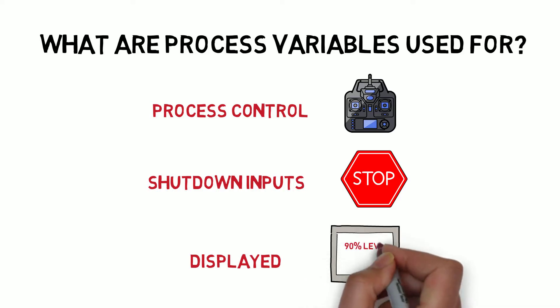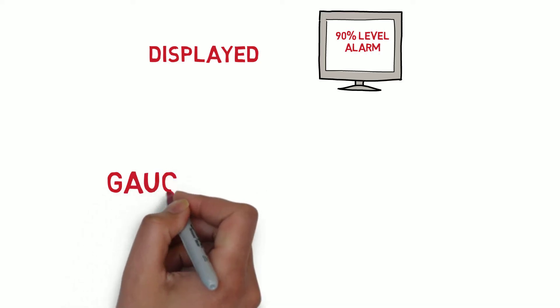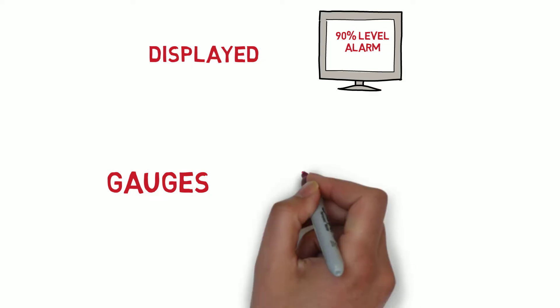that displays live plant information and generates alarms to inform the operator there is a condition the operator must respond to. Process variables can also be displayed to an operator through local indicators such as pressure gauges or enunciator panels.